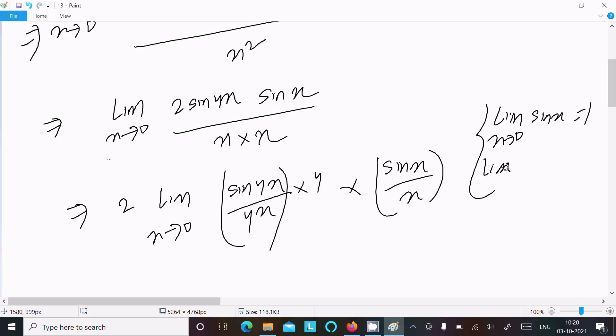And here limit 4x tends to 0, sin 4x by 4x equals 1. So x tends to 0, then 4x also tends to 0. 4 moved on the right, so it also tends to 0.